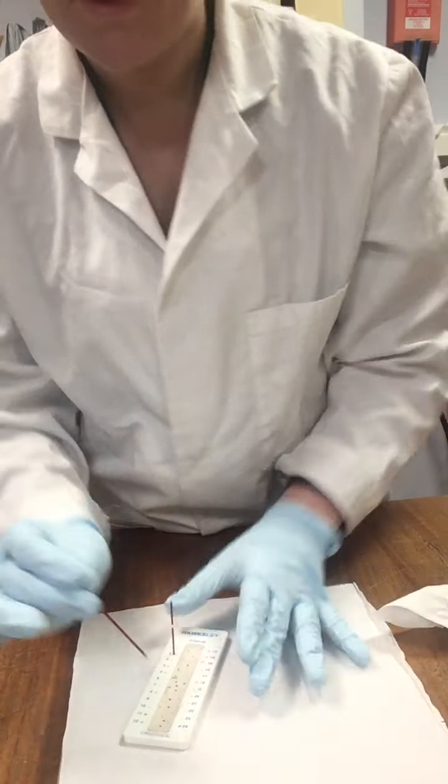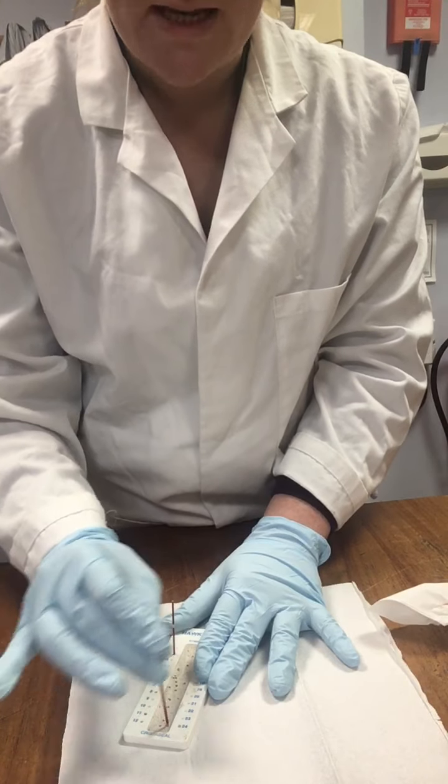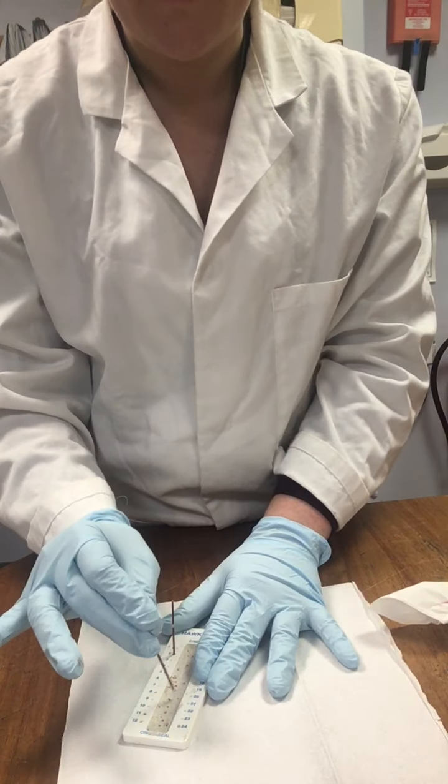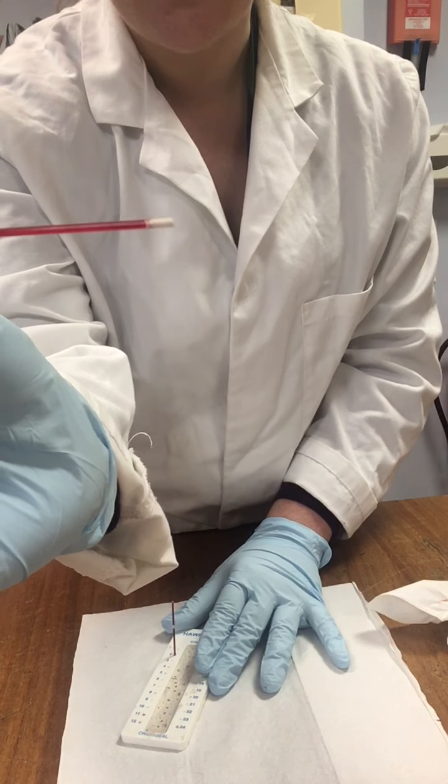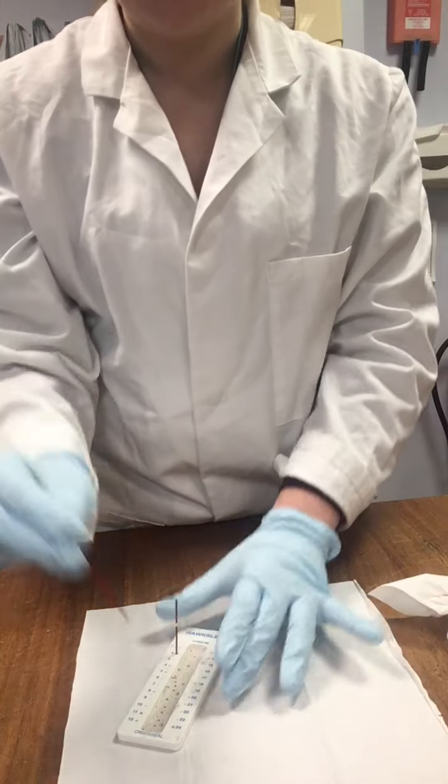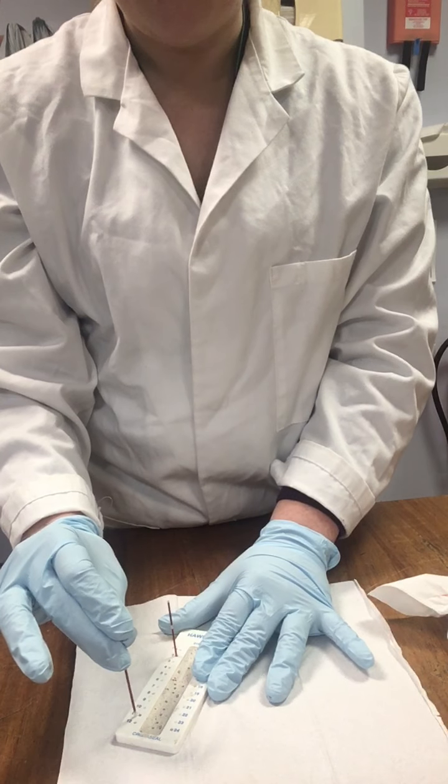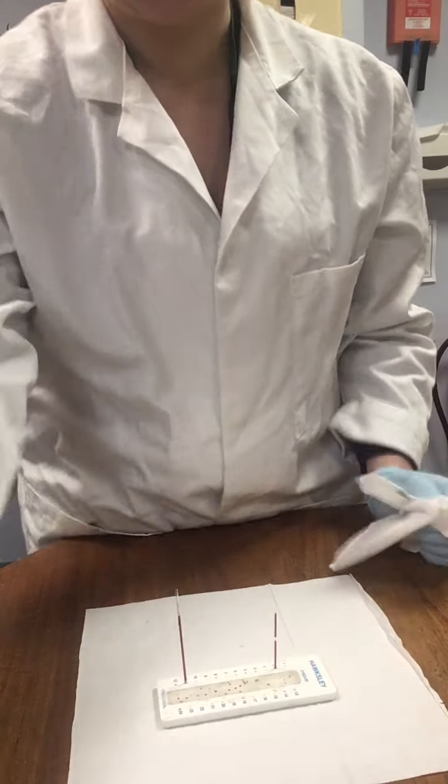And we then want to get our putty. And just placing our hematocrit into our putty, give it a couple of spins, as you can see. And what you're aiming for now is a nice clear plug at the end of your tube, which now means your blood sample isn't going to go anywhere. So, just pop that in your putty and you're ready to go.